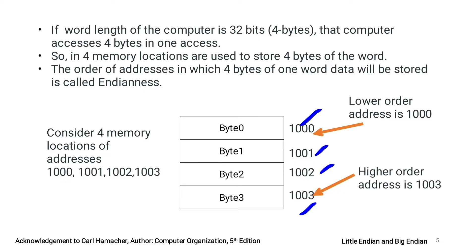Address 1000 is called the lower order address, and address 1003 is called the higher order address. These 4 memory locations can store 4 bytes of data. Hence, in a computer with a word length of 32 bits or 4 bytes, these 4 memory locations will be used to store 1 word of data.